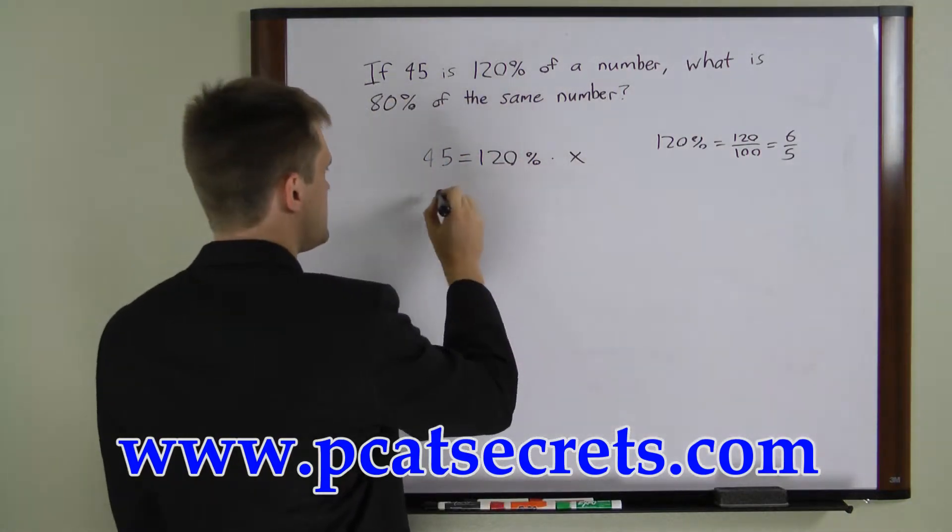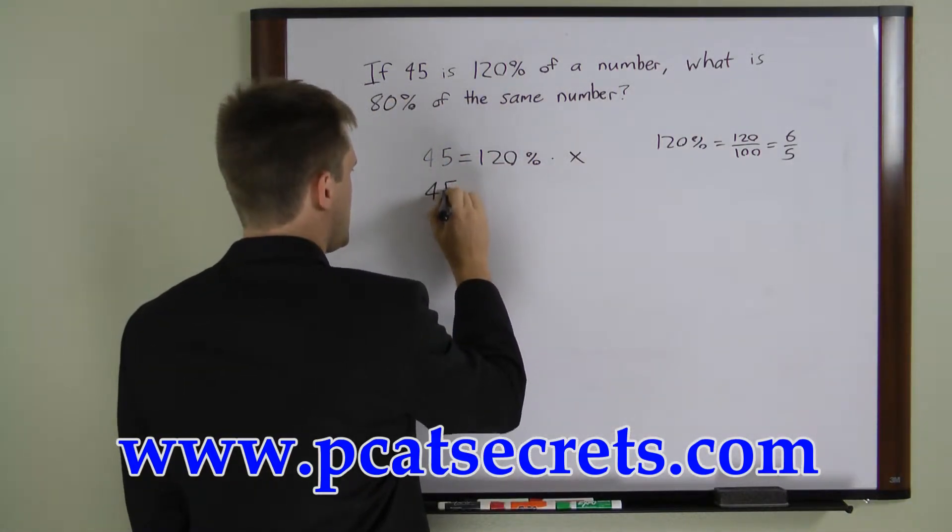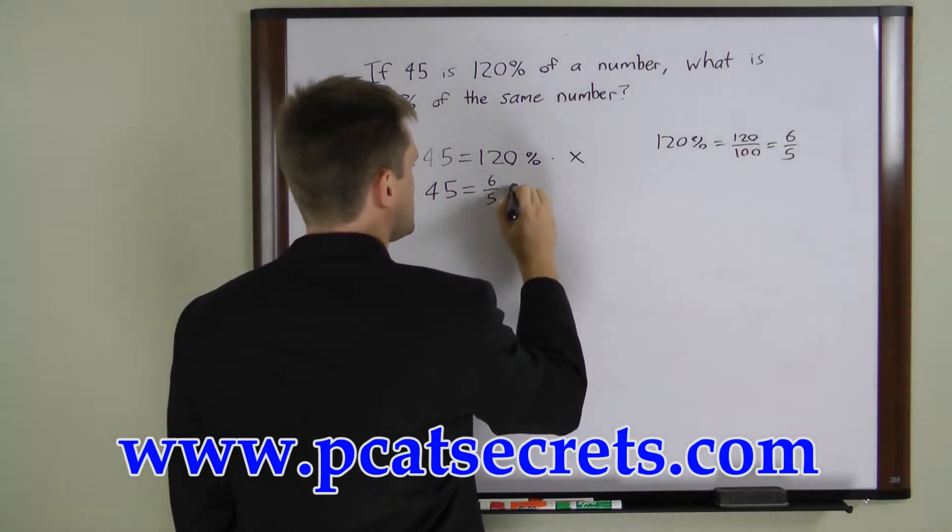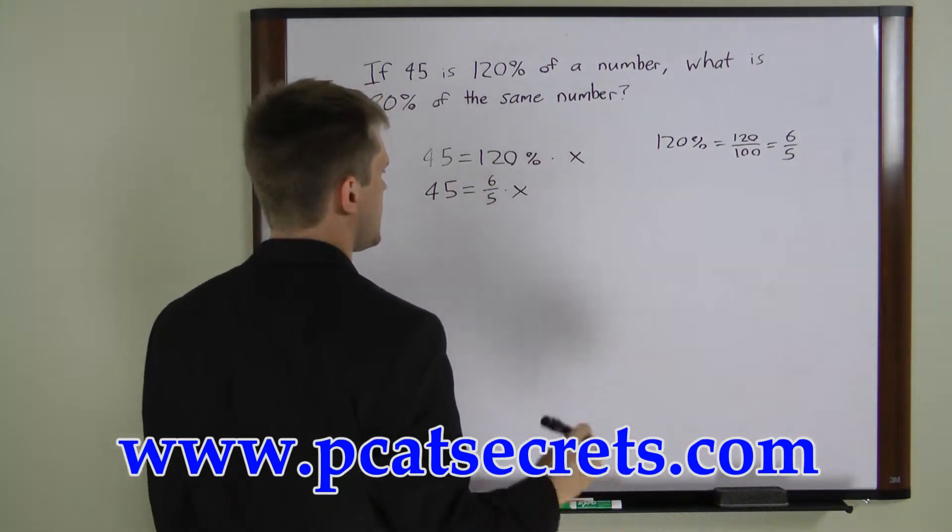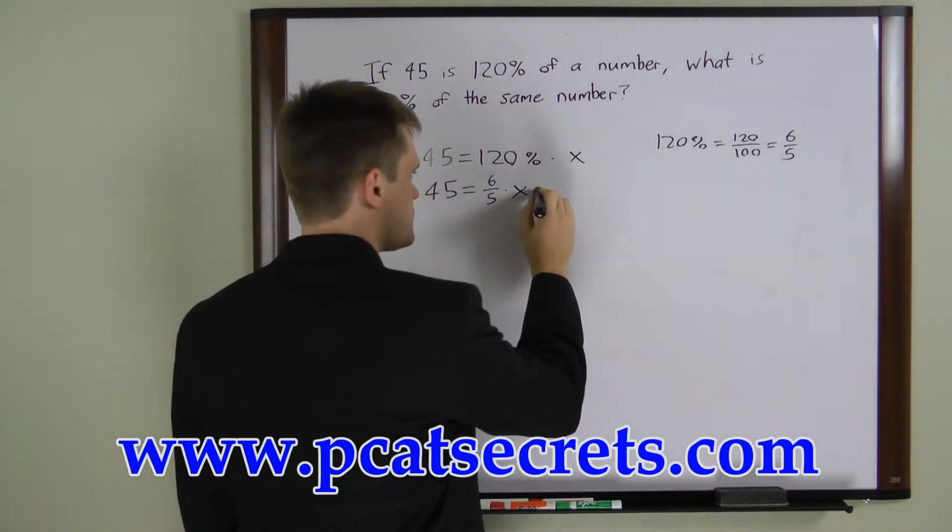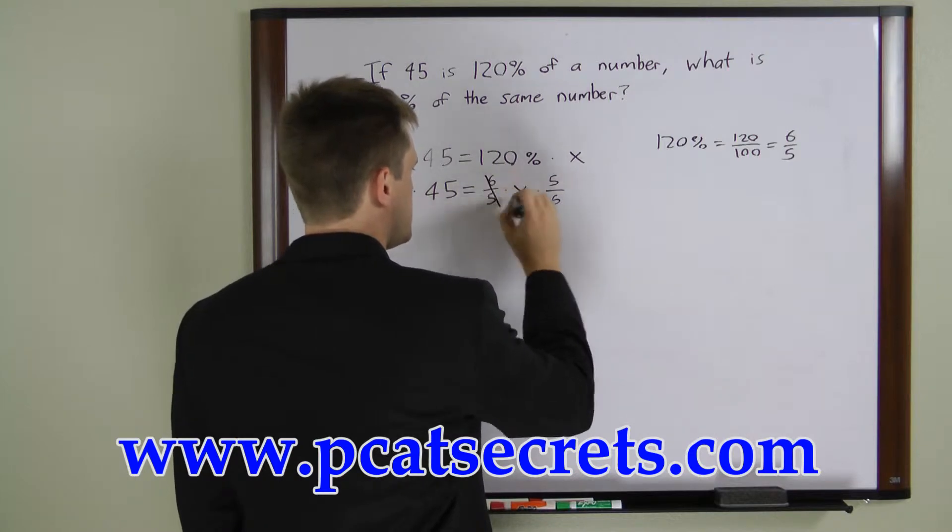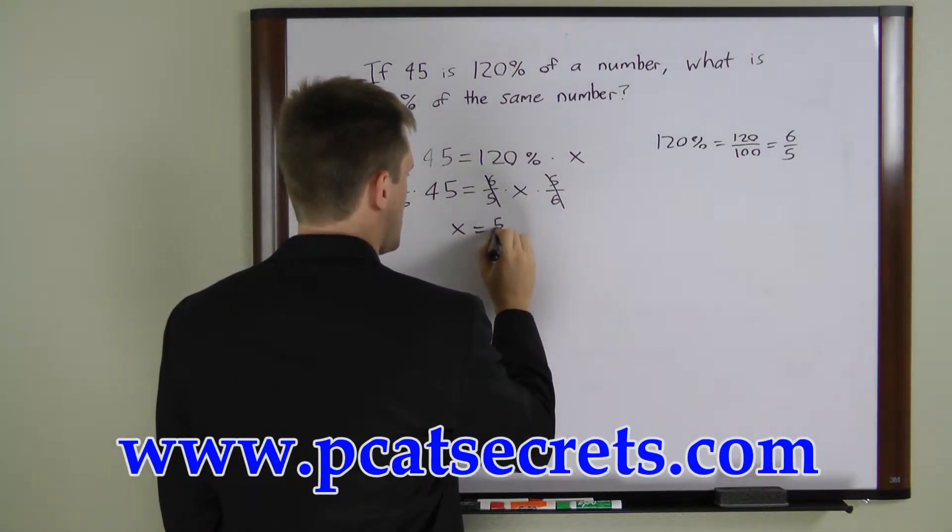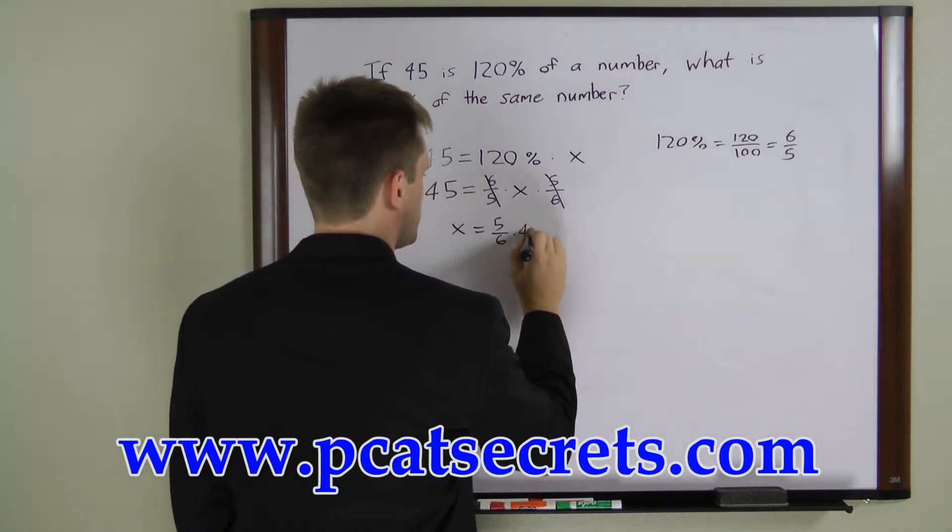Now let's substitute that into this equation and what we get is 45 equals 6 over 5 times x. Now we can multiply both sides by 5 over 6 and that will cancel this to give us x equals 5 over 6 times 45.